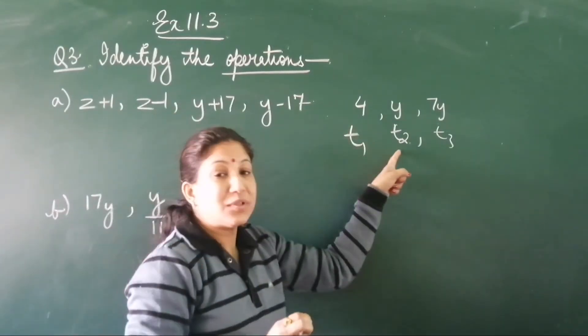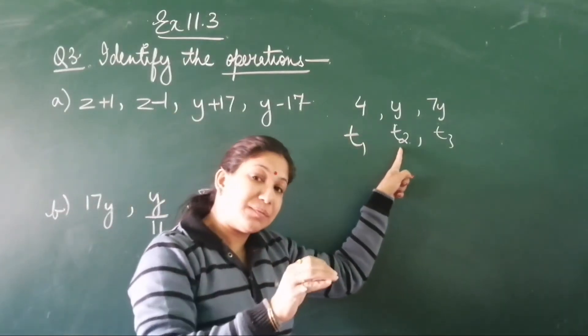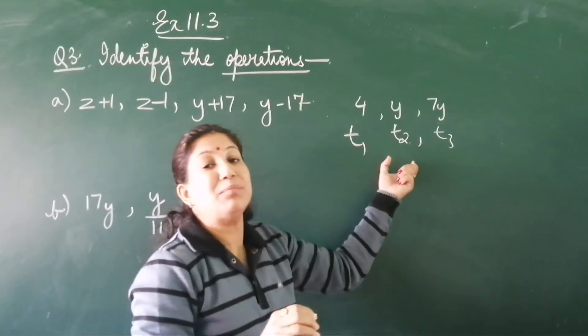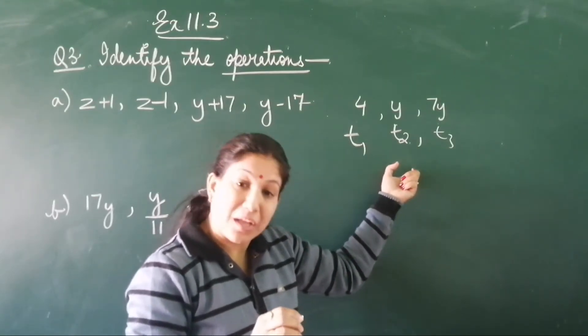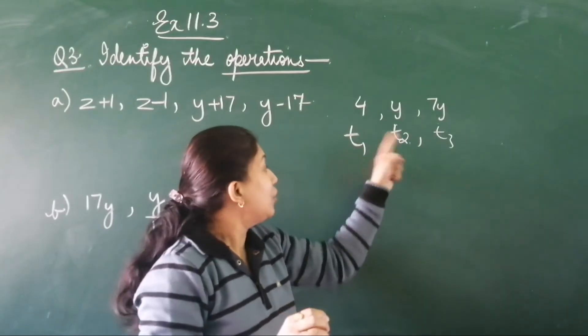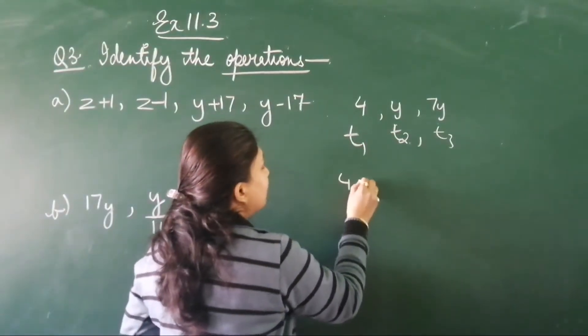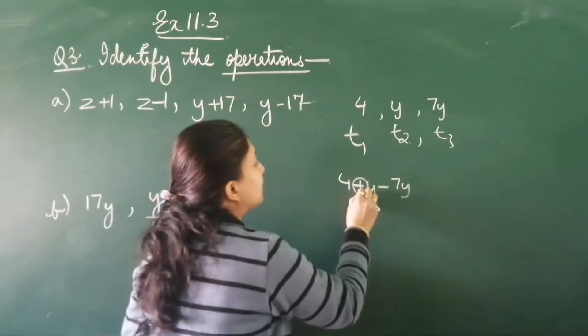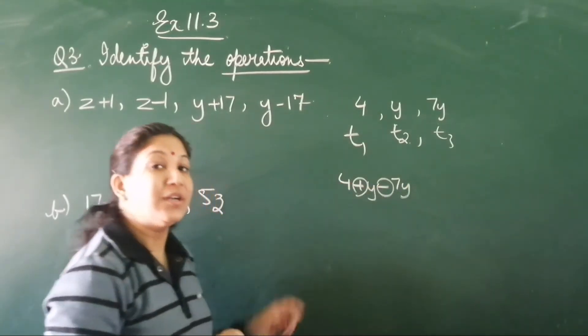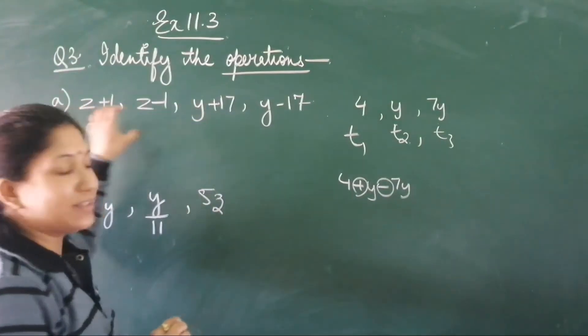Because with terms, when can you make it an expression? When you have in between some operator, that is arithmetic operations. Maybe you want these two terms - 4 plus y minus 7 - so these are the arithmetic operators. The same thing is asked in this question.